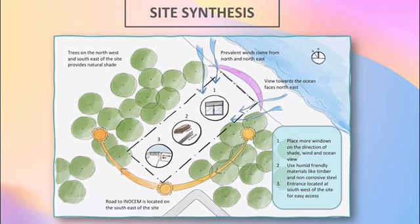Therefore, using weather and water-resistant materials such as aluminium and timber are suitable. Furthermore, the road towards Innocent comes from the southwest, so the entrance towards the rehabilitation center should also be on the southwest.